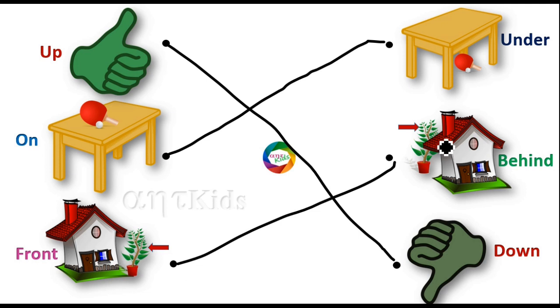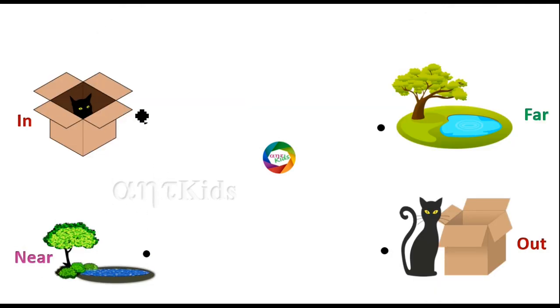This plant is behind the house. In, out. Cat is inside the box. Here the cat is outside the box.